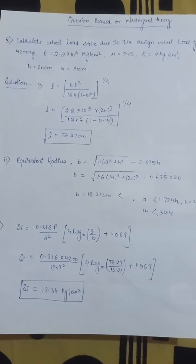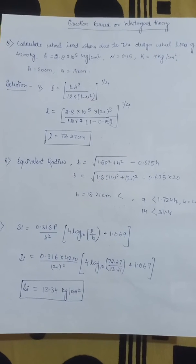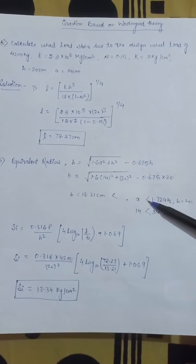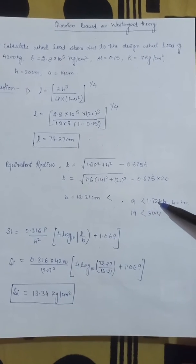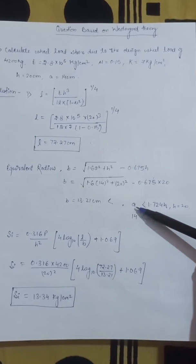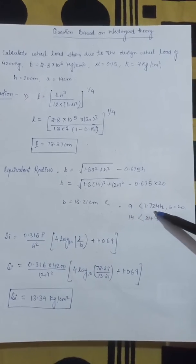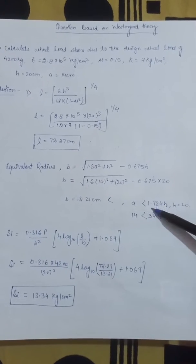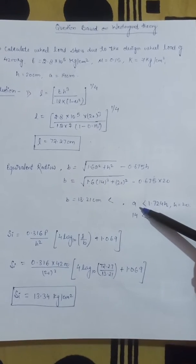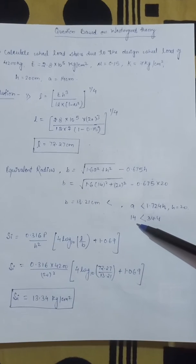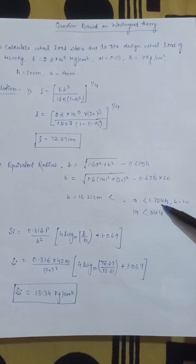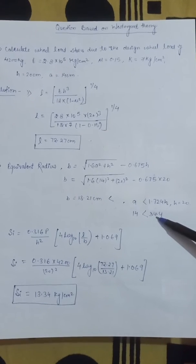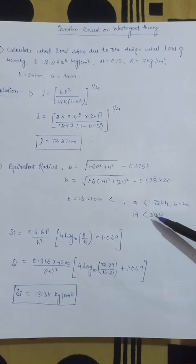Now the value of equivalent radius. We have two conditions. If a is less than 1.724h or if a is greater than or equal to 1.724h. First we check condition 1 here. a's value is radius of contact area given in question as 14. Now we multiply 1.724h, so our value is 34.4 which is greater than 14.